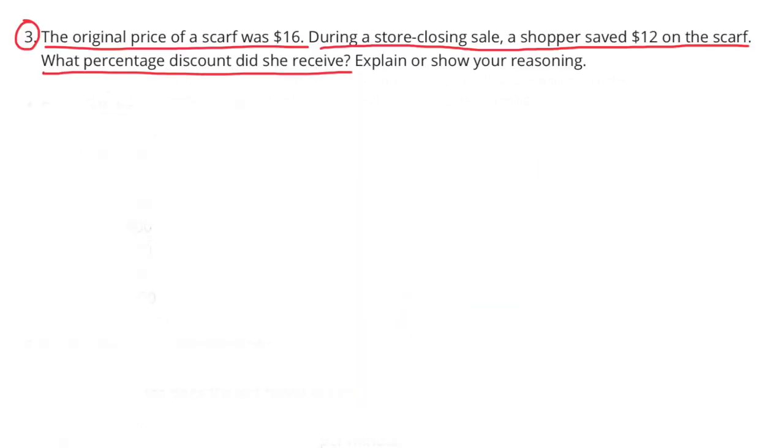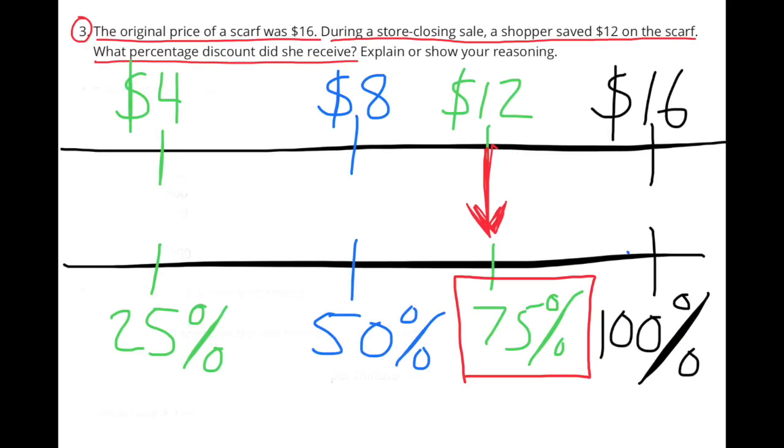Number 3: The original price of a scarf was $16. During a store-closing sale, a shopper saved $12 on the scarf. What percentage discount did she receive? I use the above information to help me build a double number line. On the right-hand side you can see I have $16 representing the original price.